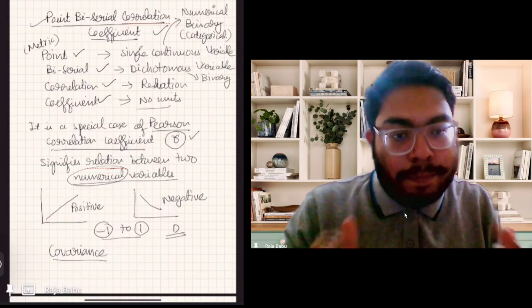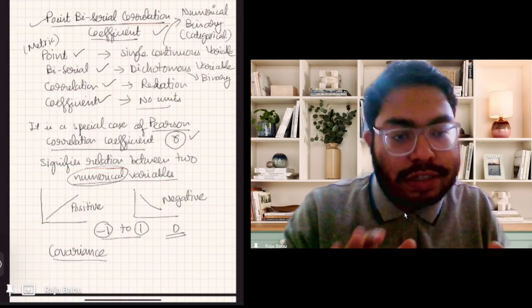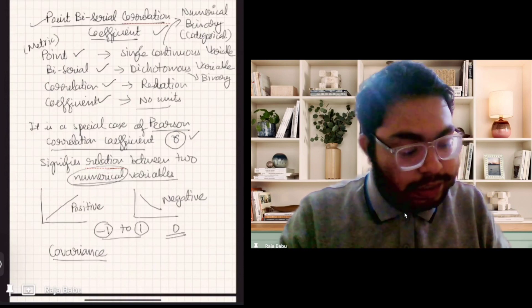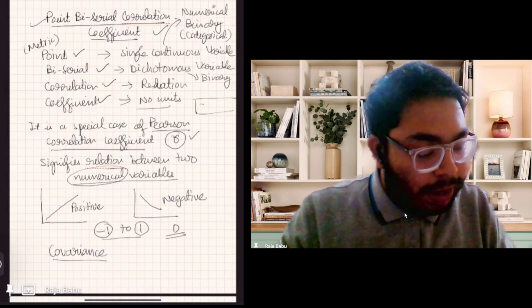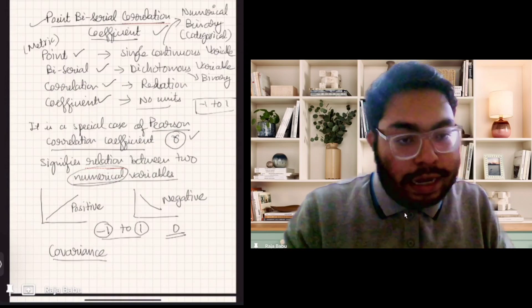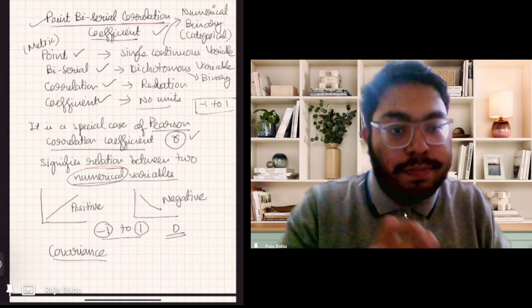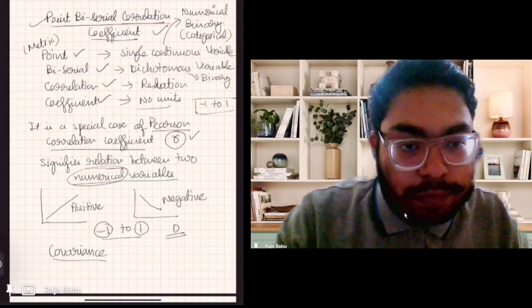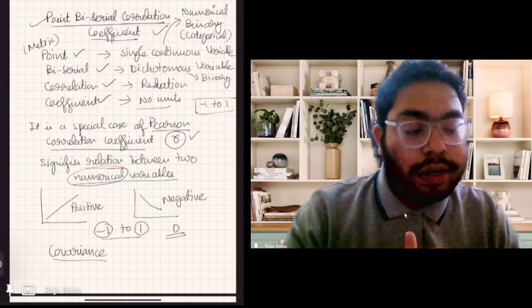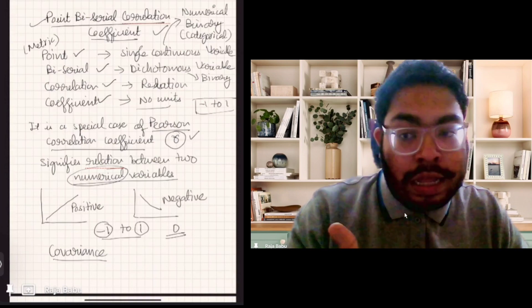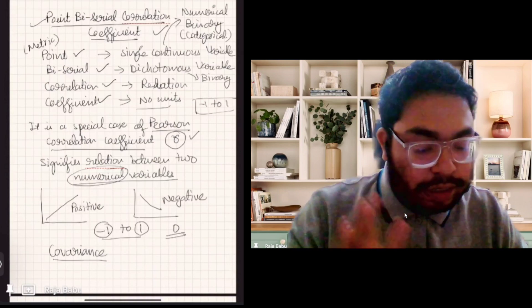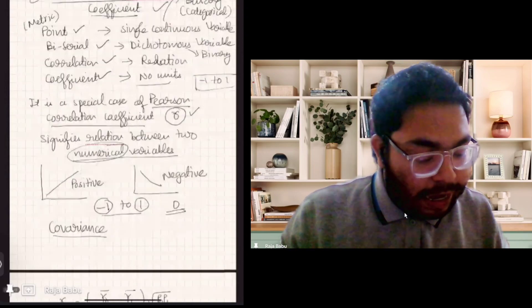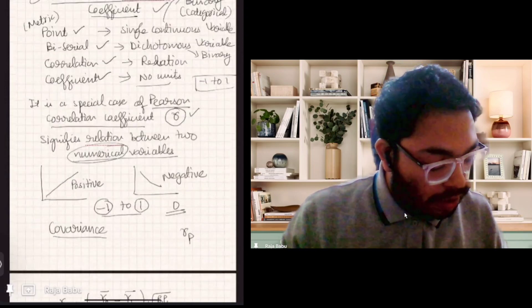Like the Pearson correlation coefficient, it also varies from minus one to one and has the same meaning: if it's minus one, it is negatively correlated; if it's one, positively correlated. The only difference is we are computing between one numerical and one categorical variable instead of two numeric variables. That's why it is called a special case of Pearson correlation coefficient, and it is denoted by R_PB.